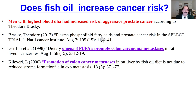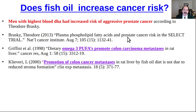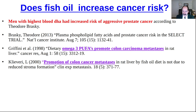What about fish oil? A lot of people are promoting fish oil, but I personally think it's a bad idea. There are papers showing increased risk of prostate cancer with fish oil. Men who had the highest blood DHA had increased risk of aggressive prostate cancer. Researcher Theodore Braski: plasma phospholipid fatty acids and prostate cancer risk in the SELECT trial. More papers: omega-3s can suppress the immune system; PUFAs are associated with increased risk of colon cancer metastases; promotion of colon cancer metastases in rats by fish oil. They also cause insulin resistance. I would recommend avoiding them.